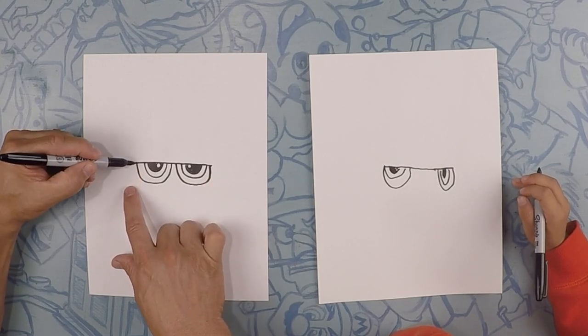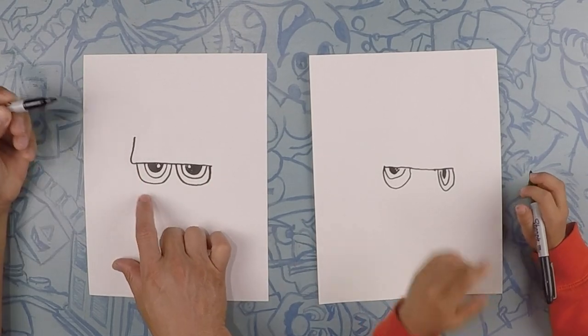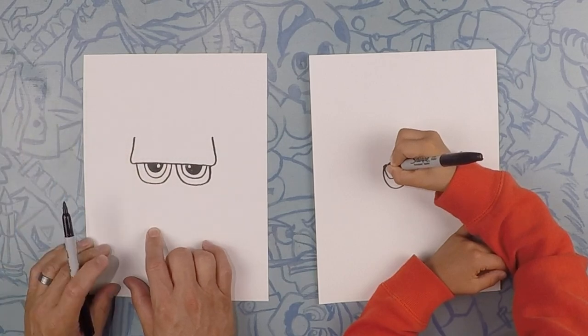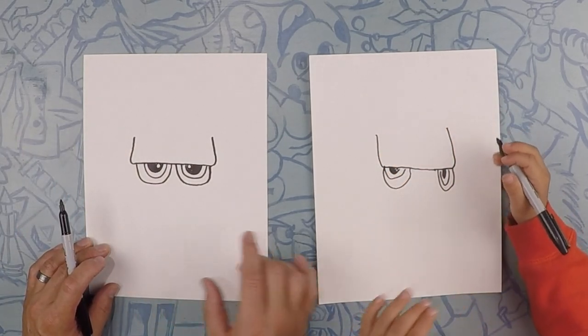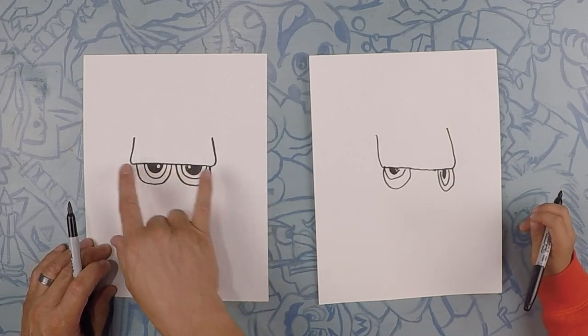So what we're gonna do from here is we're gonna kind of curve these up a little bit like that. Just like that straight up on each side. Good. I'm guessing it's gonna be like his head. Yes. This is gonna be his forehead.